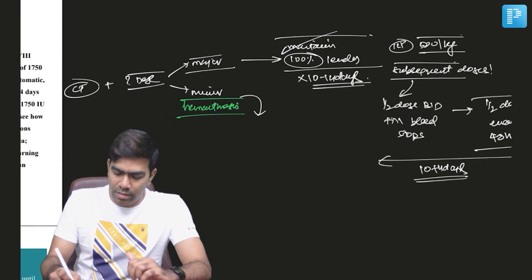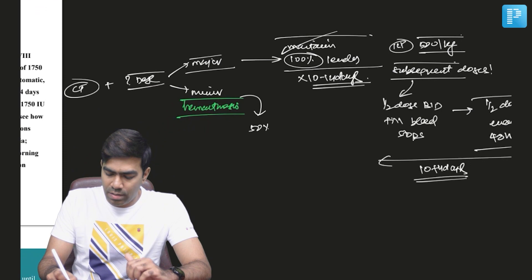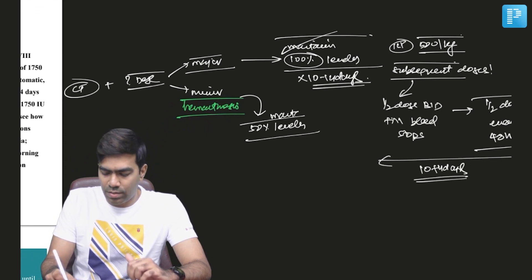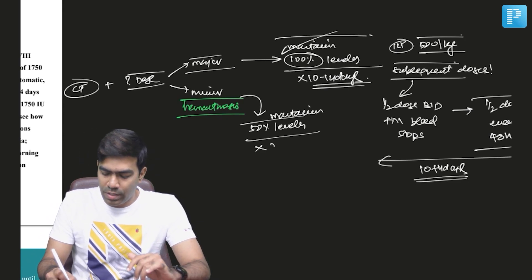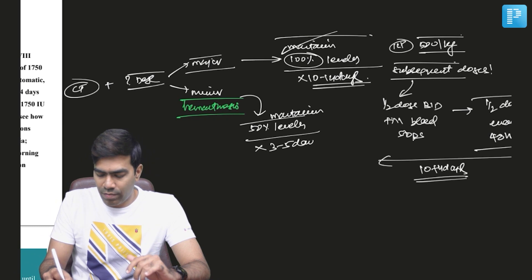And for minor bleeds we have to maintain at least 50% of the factor levels. You have to maintain factor levels at at least 50 percent. And this should be done for at least 3 to 5 days.